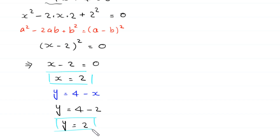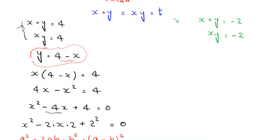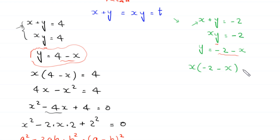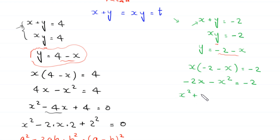Now we solve the second system where t equals negative 2. From x plus y equals negative 2, we get y equals negative 2 minus x. Substituting into xy equals negative 2, the equation becomes x times negative 2 minus x equals negative 2, which expands to negative 2x minus x squared equals negative 2, giving x squared plus 2x minus 2 equals 0.